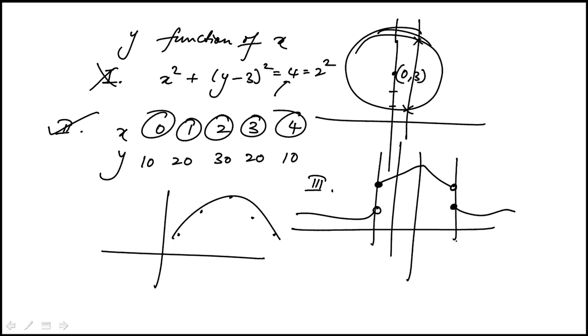You have a unique value that corresponds to each input. The graph doesn't intersect at two points when you draw this line - it's only intersecting at the solid point. So three is also a function. The answer is two and three, choice E.